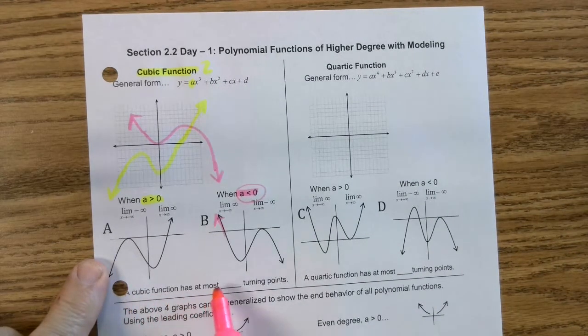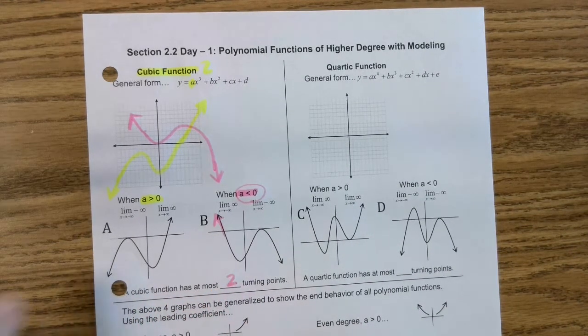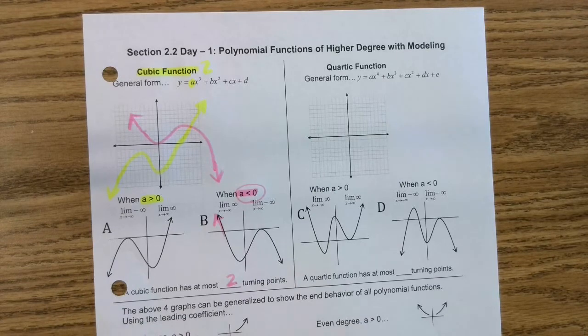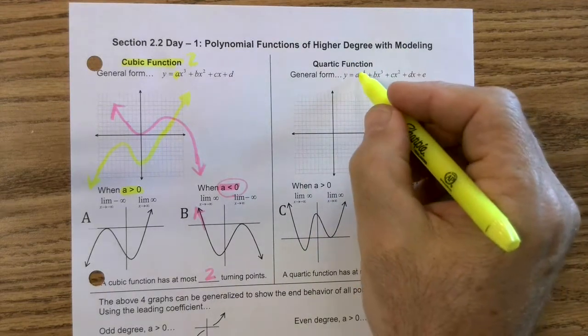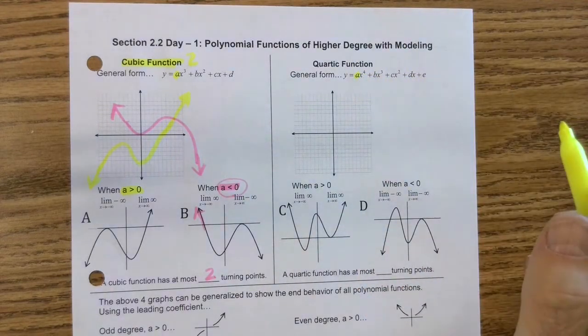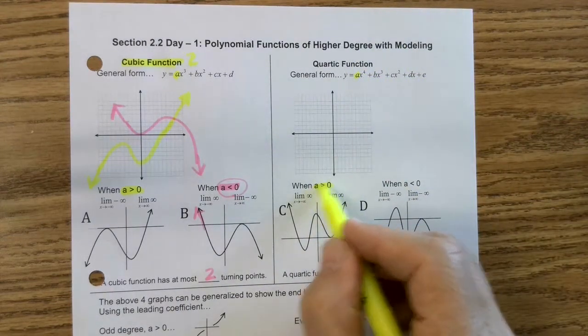So a cubic function has at most two turning points. Let's move over to this quartic. Well, once again, we got some rules. We got A, which is our leading coefficient, and here's some special rules.